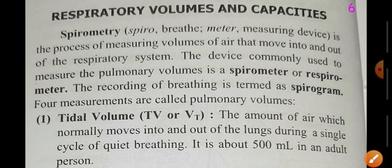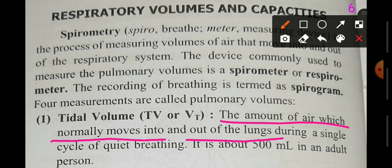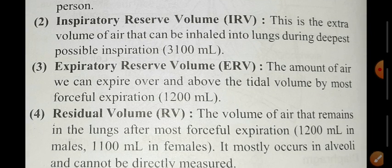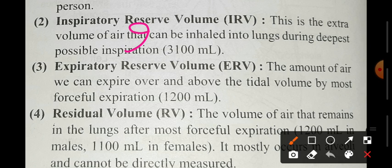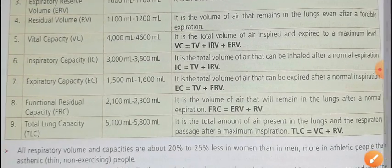For measurement we use four terms, called pulmonary volumes, because they are related to the lungs. The first is tidal volume — the amount of air which normally moves into or out of the lungs. This is the air we inhale and exhale normally, and its value is approximately 500 millilitres. Next is inspiratory reserve volume — the maximum extra air we can inhale forcefully, which is approximately 3100 ml, though some books mention 2500 ml.